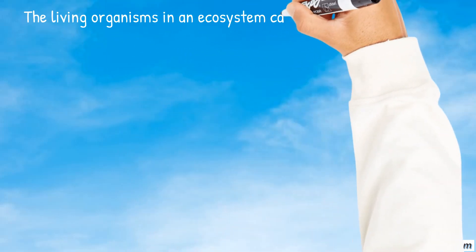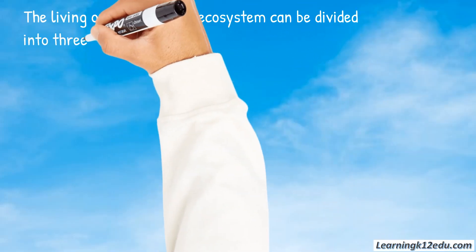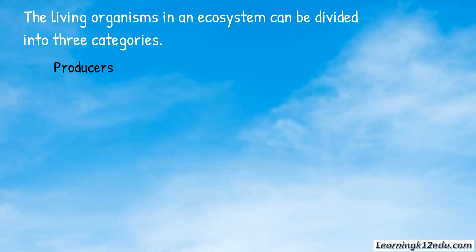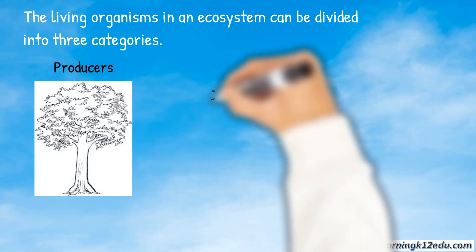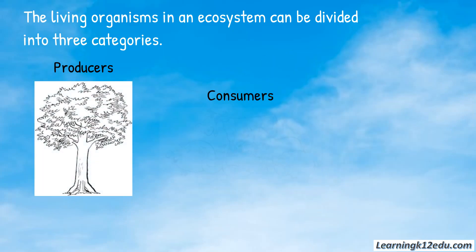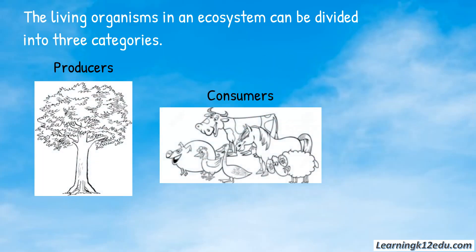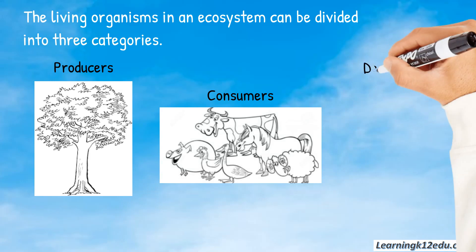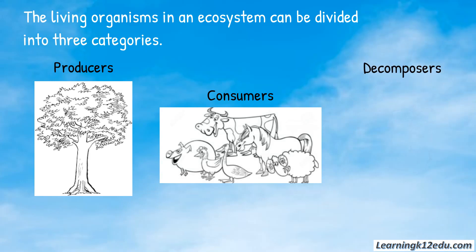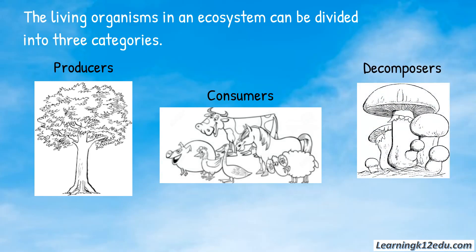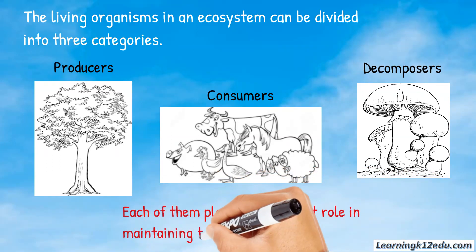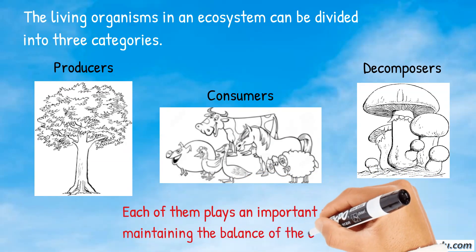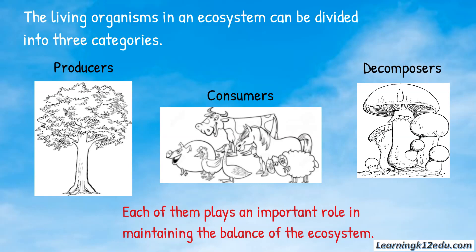The living organisms in an ecosystem can be divided into three categories: producers, consumers, and decomposers. Each of them plays an important role in maintaining the balance of the ecosystem.